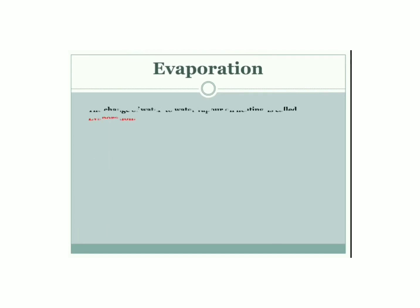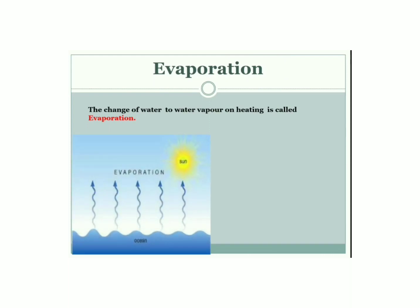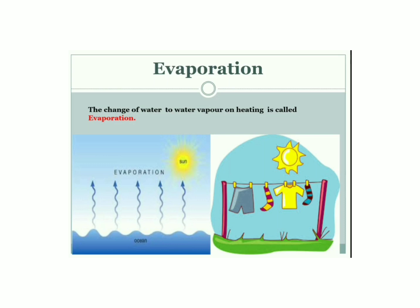Evaporation: the process by which water changes into water vapor is called evaporation. The amount of water vapor present in the air is called humidity. Evaporation in nature takes place due to the sun's heat. On a very hot day, water evaporates faster and is spread over a large surface or area. You might have seen clothes hanging on a clothesline — they get dried faster due to high evaporation by the heat of the sun.